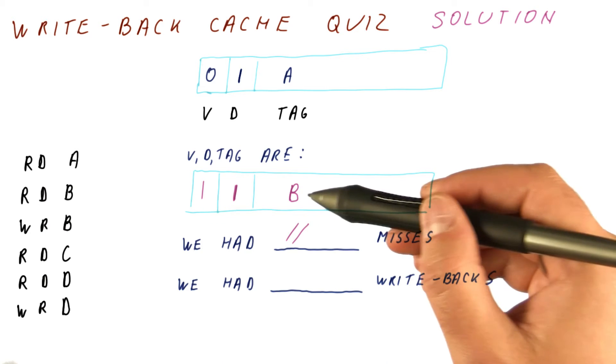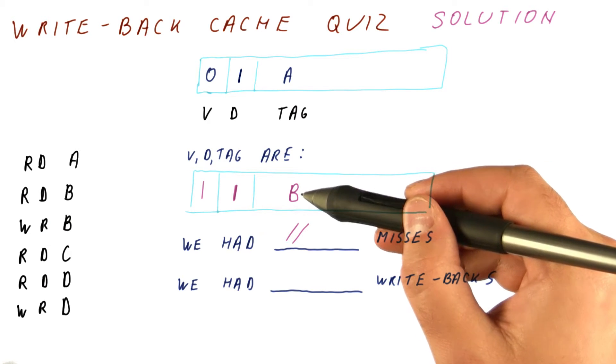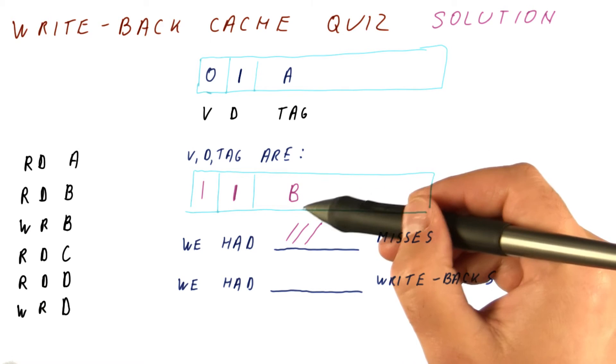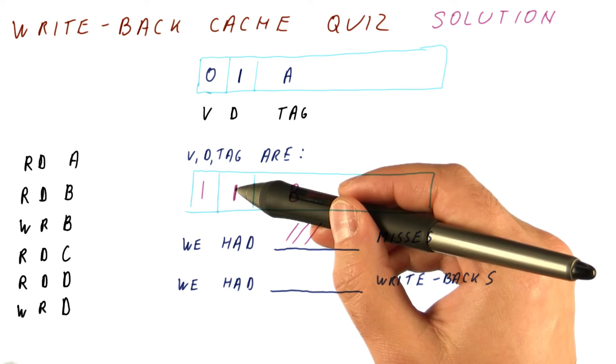Next, we read C. We check the tag—mismatch. This is a miss. We need to replace B, so we check: is it dirty? Yes, it is.